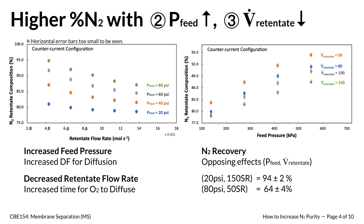Unfortunately, having higher nitrogen purity in the retentate stream has its trade-offs, as nitrogen purity has an inverse relationship with nitrogen recovery. Nitrogen recovery is defined as the ratio between the nitrogen molar flow rate in the retentate and that in the feed stream. Operating conditions that maximize nitrogen gas purity minimize the nitrogen gas recovery, because both gases permeate through the membrane, although at different rates.